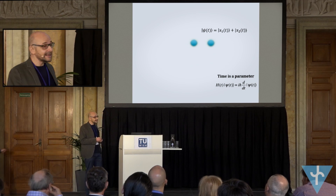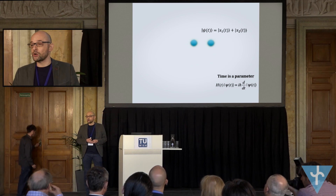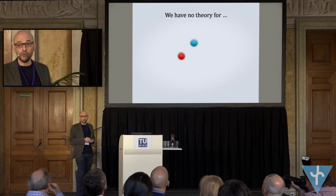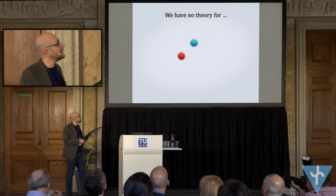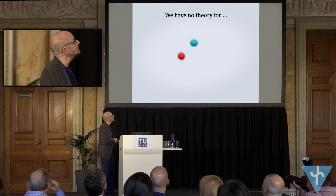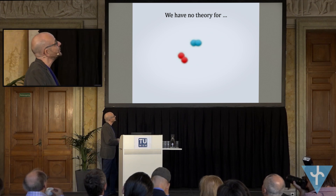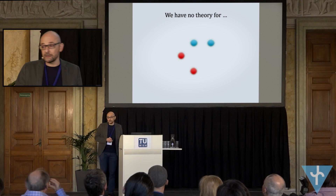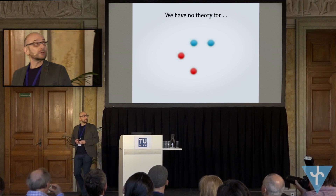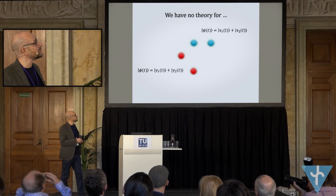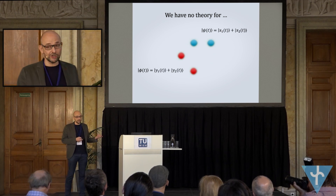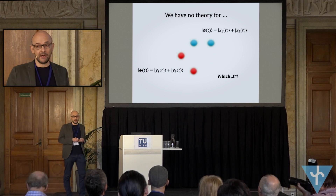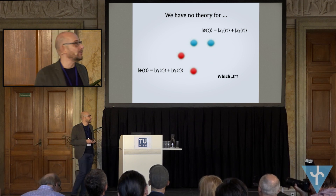The next non-trivial case is already a problem for us. Imagine we have two particles — a blue one and a red one — and we put them in a spatial superposition. We would like to have the same evolution for this spatial superposition, but the first question we might pose is: which t?